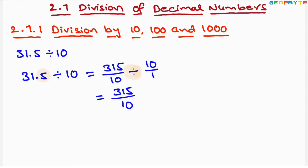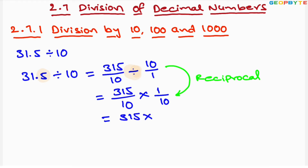We find the reciprocal, so the division symbol is converted into multiplication: 315 by 10 into 1 by 10. We perform the product of numerators by product of denominators — 315 into 1 gives 315, and 10 into 10 gives 100. So we get 315 by 100.